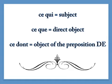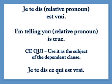Let's look at some examples. Je te dis [relative pronoun] est vrai — 'I'm telling you [blank] is true.' We need the relative pronoun ce qui here, which means 'what' in English: 'I'm telling you what is true.' Je te dis ce qui est vrai. Ce qui is correct because it is used as the subject of the dependent clause — 'what' becomes the subject: 'I'm telling you what is true.'